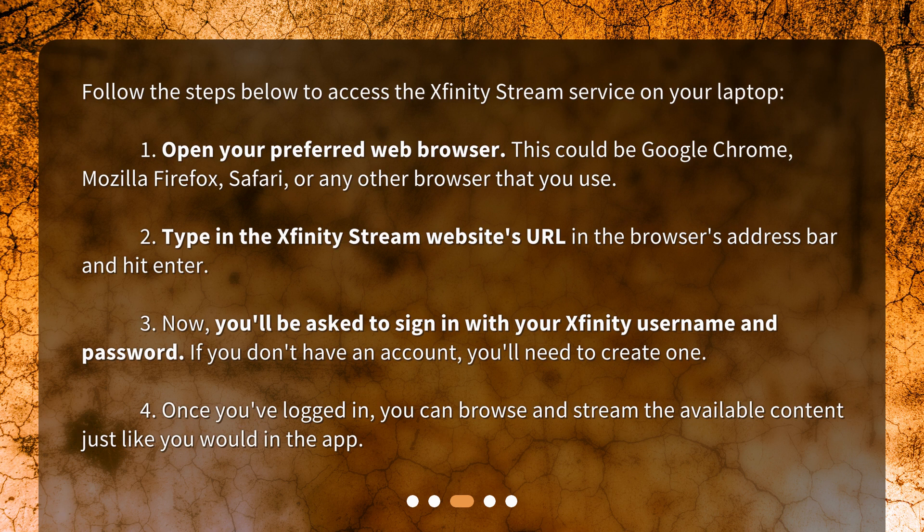Step 2: Type in the Xfinity Stream website's URL in the browser's address bar and hit enter. Step 3: You'll be asked to sign in with your Xfinity username and password. If you don't have an account, you'll need to create one. Step 4: Once you've logged in, you can browse and stream the available content just like you would in the app.